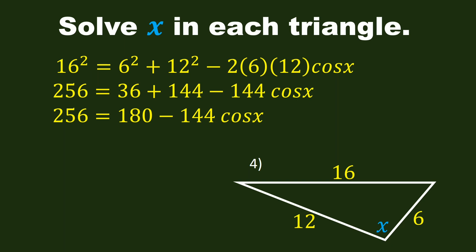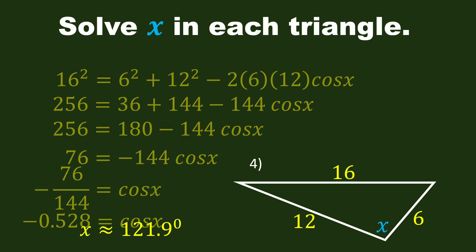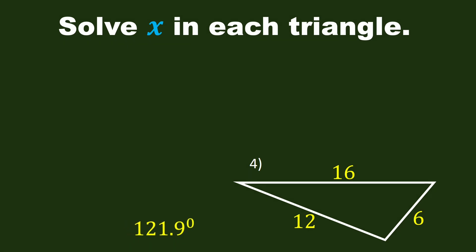Add both sides by negative 180. So we have 76 is equal to negative 144 cosine X. We have 76 over negative 144 is equal to cosine X. That is negative 0.528. And X is equal to 121.9 degrees. We solved X in this triangle.